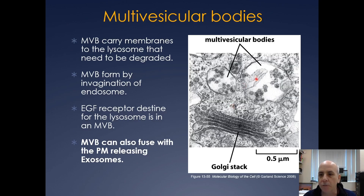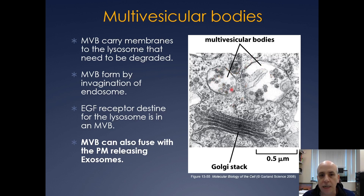One of the big things is the formation of these things called multivesicular bodies. These actually carry membranes to the lysosome that need to be degraded, and oftentimes they're carrying also receptors. They form by invagination of the endosome.